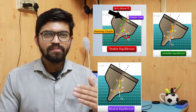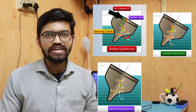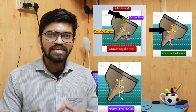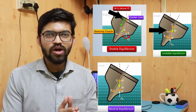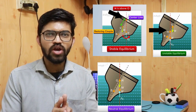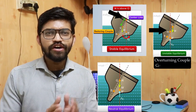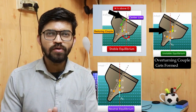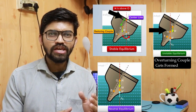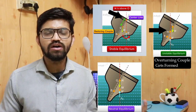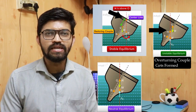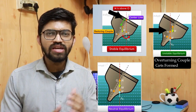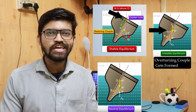In the second case — unstable equilibrium — the metacenter is below the center of gravity. Here, the buoyancy force and the weight act together to form an overturning couple, causing the body to sink into the fluid. In this unstable equilibrium condition, the chances of sinking are much greater.